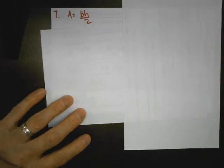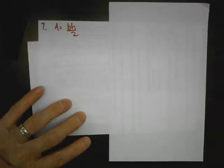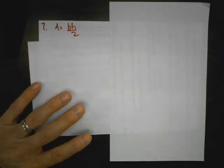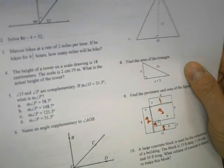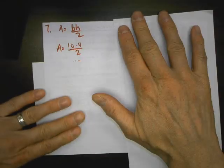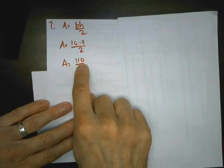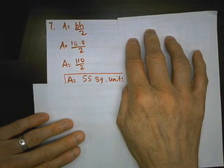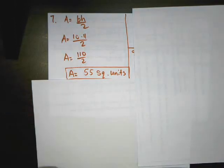Number seven, we're finding the area of a triangle. And the area of a triangle is always one-half base times height, or another way to say that is base times height and then divide that by two. And they give us the base and the height, so I simply have to multiply 10 times 11. And multiplying by 10 is simple. We just put a zero after it. So 11 times 10 just means 11 with a zero. And then divide that by two and I get 55 square units.